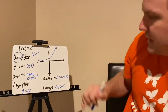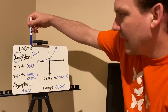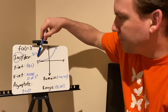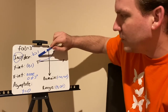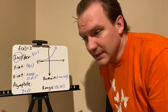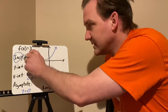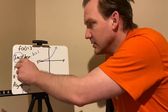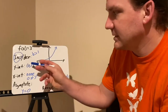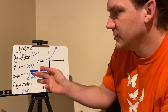When I graph f(x) = 3ˣ, because my b value — the base — is greater than 1, the function is increasing. If the base is greater than 1, it's increasing; if it's 1, it's a straight line; if it's between 0 and 1, it's decreasing. The y-intercept is where x = 0: 3⁰ = 1, so the y-intercept is 1. For exponential functions in this standard parent form, the y-intercept is always 1.